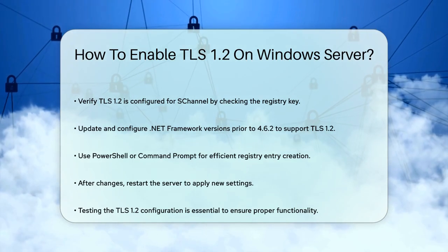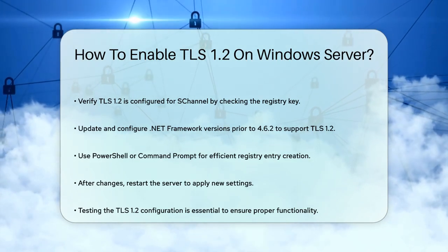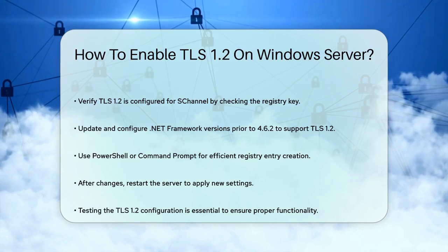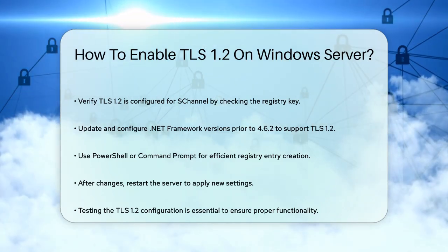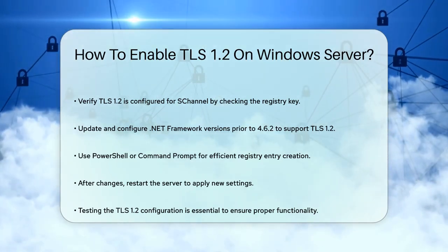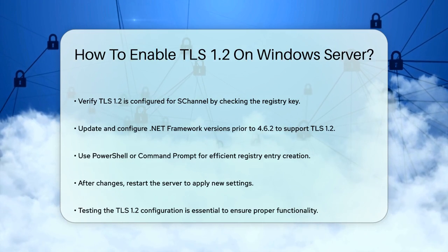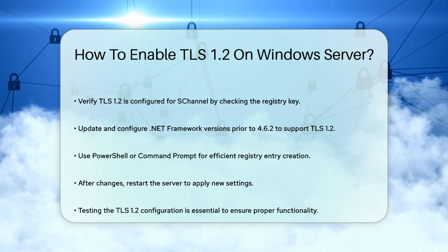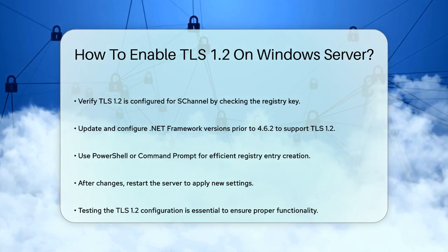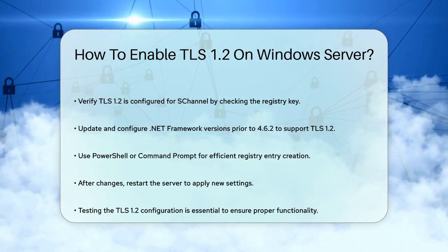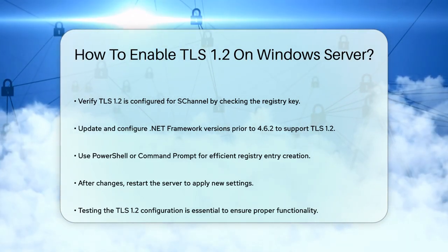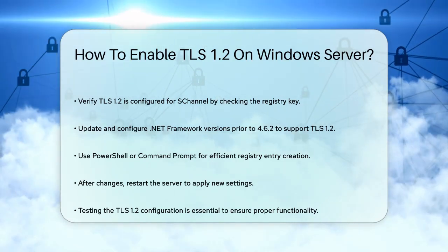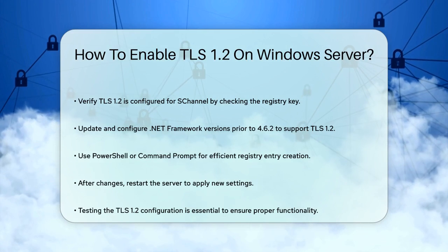After making these changes, restart your server to ensure the new settings take effect. It's also a good idea to test your TLS 1.2 configuration to make sure everything is working as expected. By following these steps, you'll be able to enable TLS 1.2 on your Windows server, enhancing the security of your communications and protecting your data. Remember to always back up your registry before making changes and to test your setup thoroughly to avoid any disruptions.